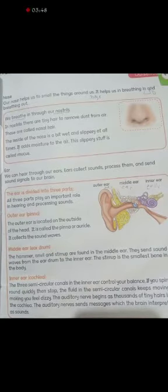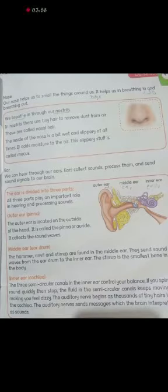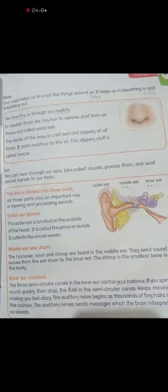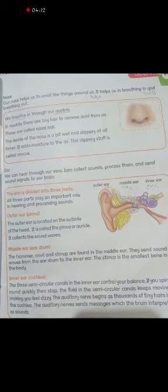Look at this picture — outer ear, middle ear and inner ear. The outer ear is located on the outside of the head; it is called the pinna or auricle, and it collects sound waves. In the middle ear, the hammer, anvil and stirrup send sound waves from the eardrum to the inner ear. The stirrup is the smallest bone in the body.